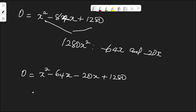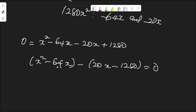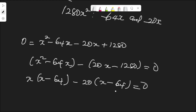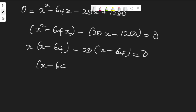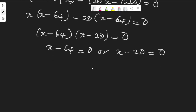Grouping the terms two by two: s squared minus 64s, then minus 20s plus 1280. From the first group, s is factored out giving s(s minus 64). From the second group, 20 is factored out giving 20(s minus 64). So we have (s minus 64)(s minus 20) equals 0, meaning s equals 64 or s equals 20.